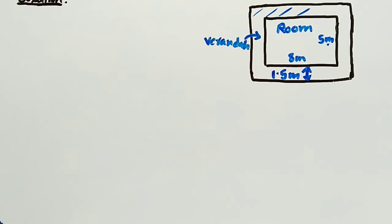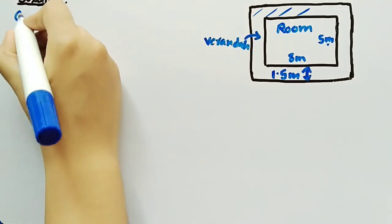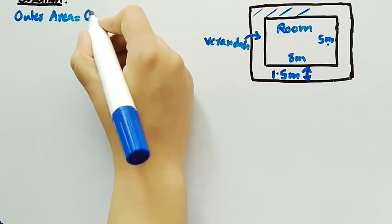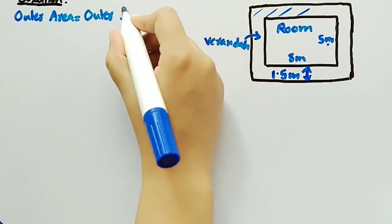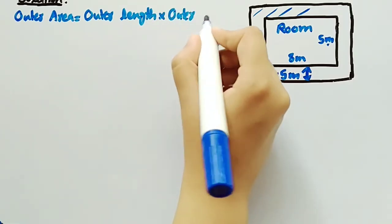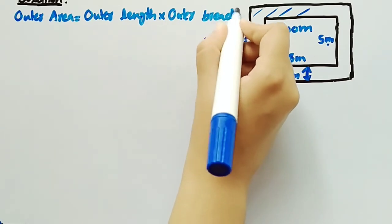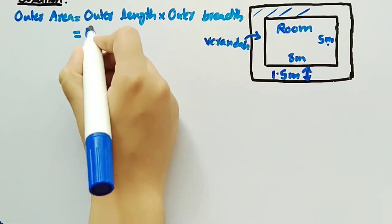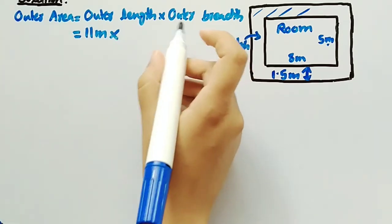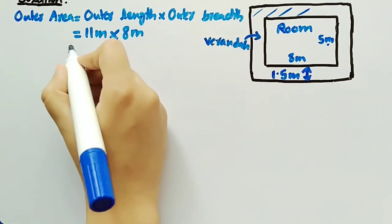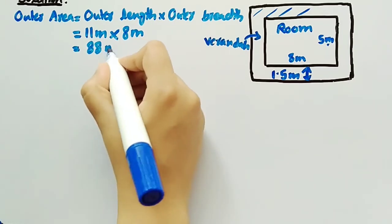Since we have calculated outer length and outer breadth, we can now calculate outer area, which is equal to outer length multiplied by outer breadth. Substituting the values: outer length is 11 meter multiplied by outer breadth 8 meter, giving us 88 meter square.